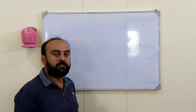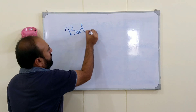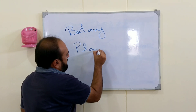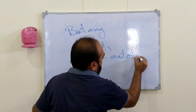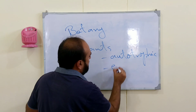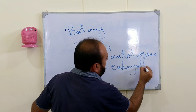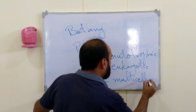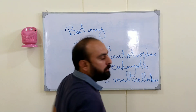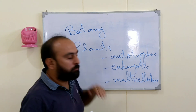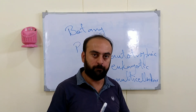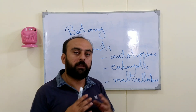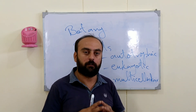The study of plants is called botany. Plants are autotrophic, eukaryotic and multicellular organisms in the kingdom Plantae. Autotrophic means that plants can synthesize their own food. That's why they are also called producers. Plants are primary producers on which all forms of life depend.